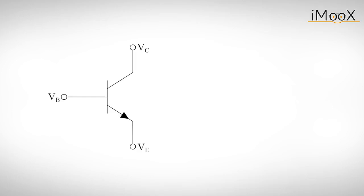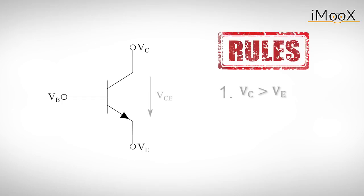To amplify a signal with the NPN transistor we have to observe some basic rules. The first rule is that the collector must be more positive than the emitter. Secondly, we assume that the voltages between base and emitter to be at least 0.6V to ensure that the base emitter diode is conducting.